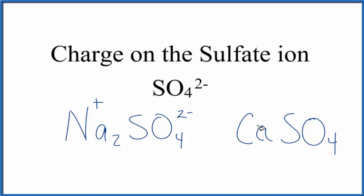For calcium, it's in group 2. So it has a 2+. Since we have the 2+ here, the whole sulfate ion, it's a polyatomic ion. It's going to stay together. That's going to be 2-. So that's one way to think about where the 2- comes from here with the sulfate ion.